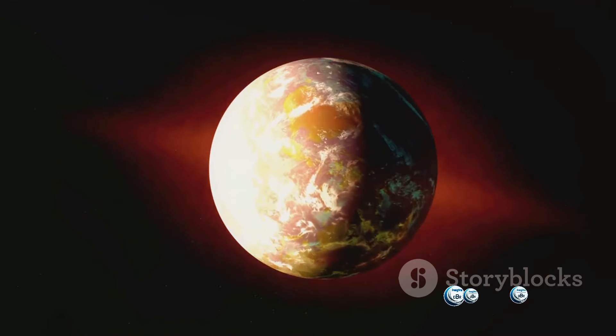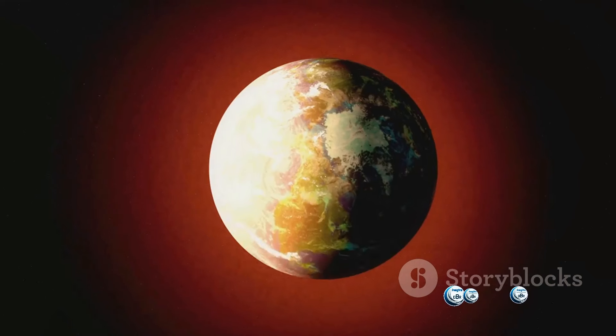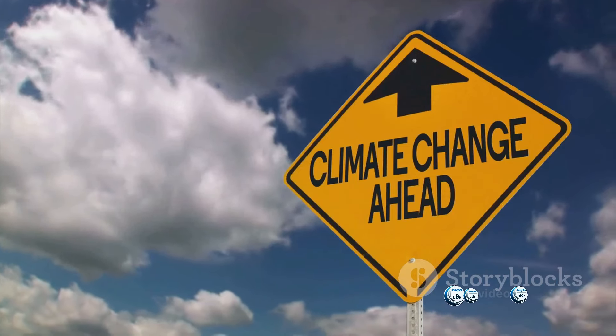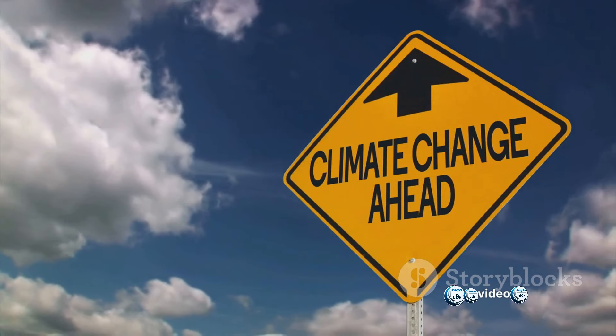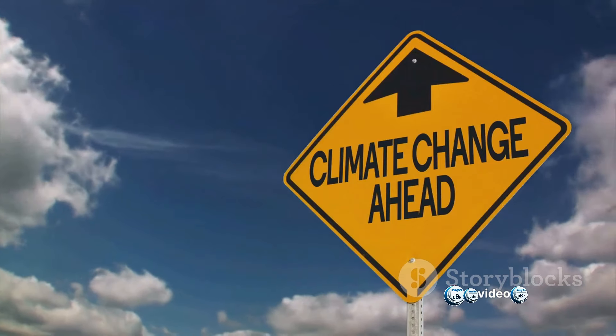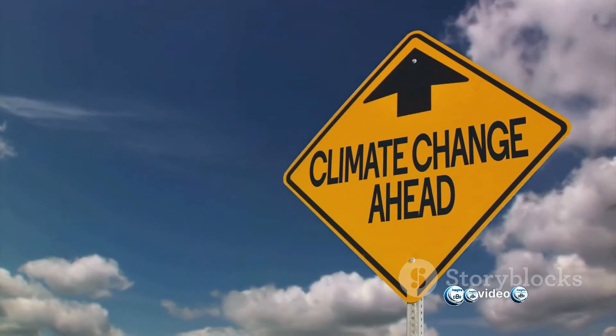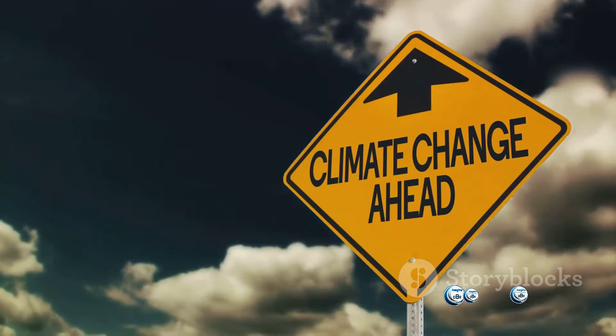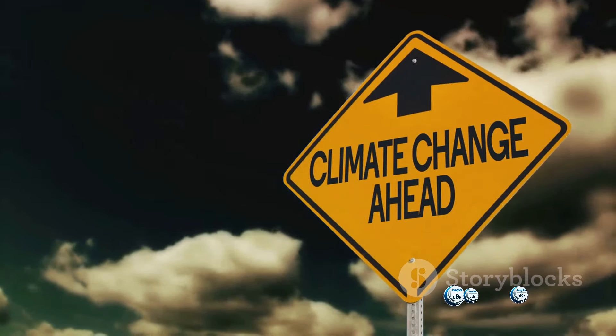Well, the atmosphere plays a critical role in regulating Earth's climate and weather patterns. A different mix of gases could lead to a dramatically different climate, with implications for all life forms. For instance, a warmer atmosphere might mean higher sea levels, more intense storms, and shifts in habitats for plants and animals.